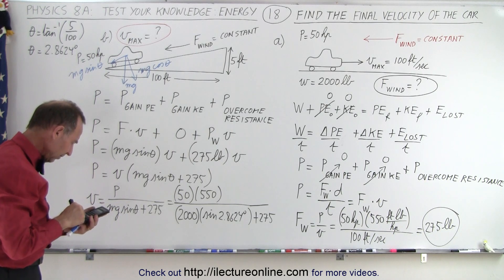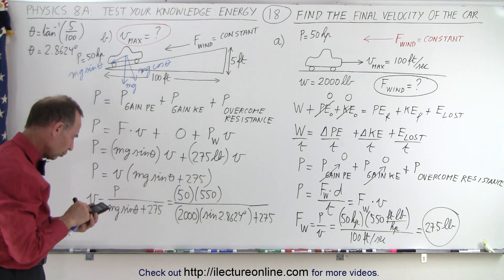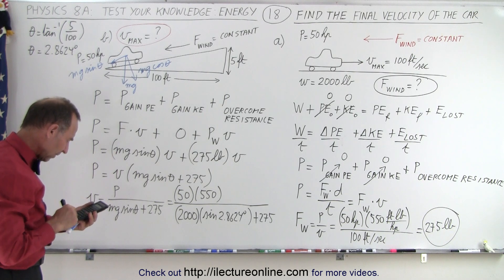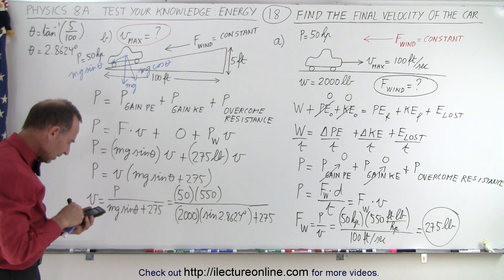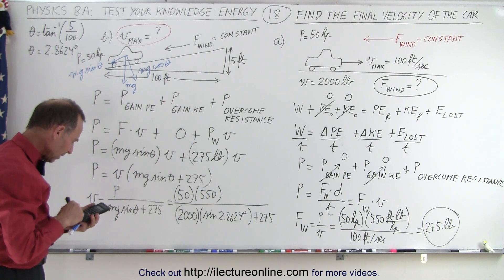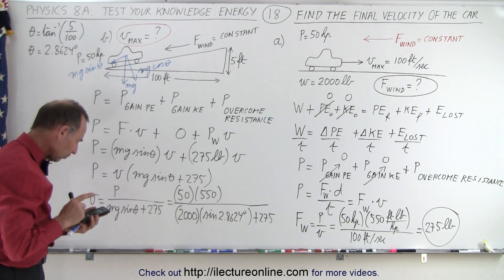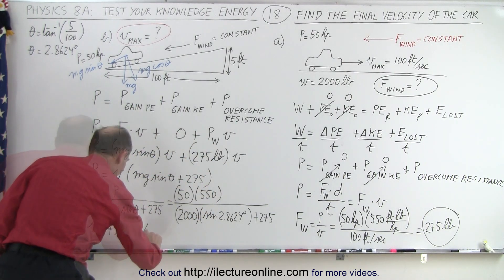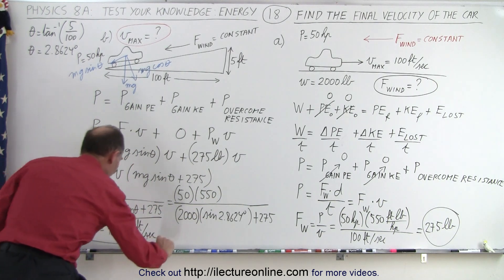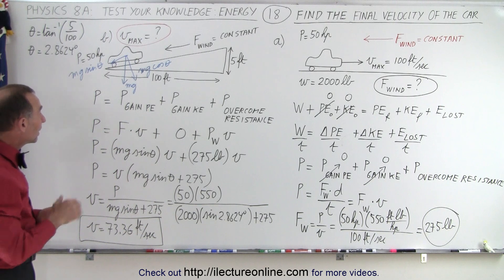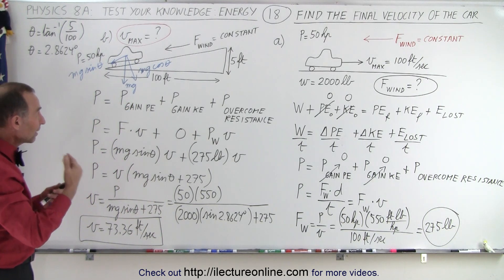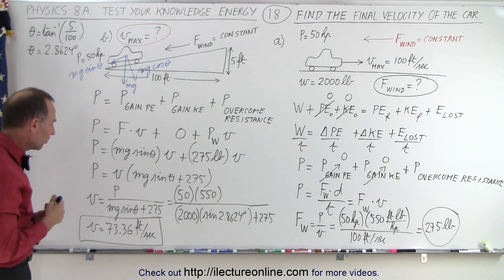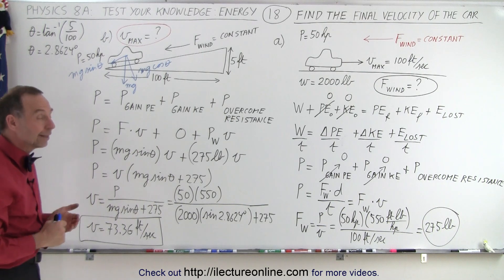Calculating: take the sine of 2.8624 degrees, multiply by 2,000, add 275, then divide that into the numerator of 50 times 550. This gives a speed of 73.36 feet per second — essentially 73.4 feet per second. That is the maximum speed the car can drive up the hill with the same wind resistance. Compared to driving on a level road at 100 feet per second, the maximum speed is now reduced to 73.36 feet per second.